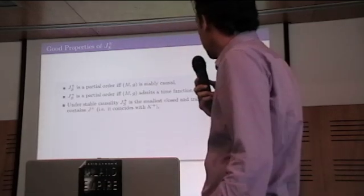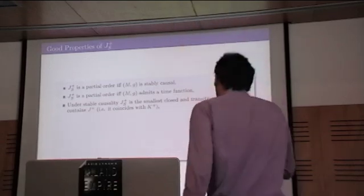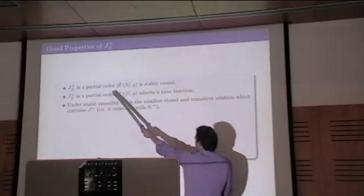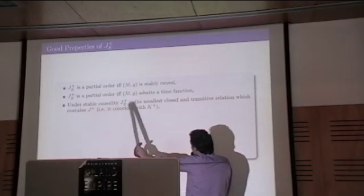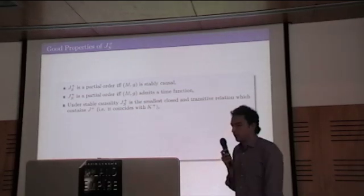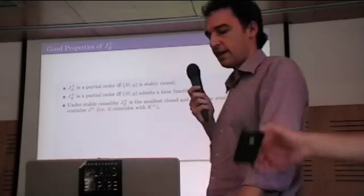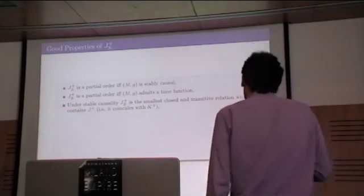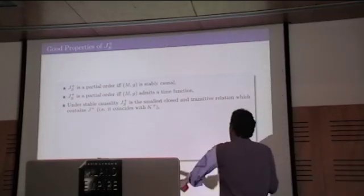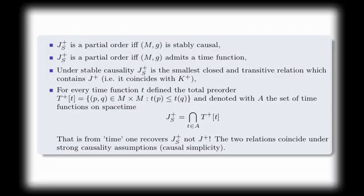In part, this relation has many good properties. First, this relation here is a partial order if the space-time is stably causal. So if and only if it admits a time function. And there is this fact here: this relation under stable causality is the smallest, actually, closed and transitive relation which has the property of containing the causal relation. In technical terms, it is the same as the relation introduced by Sorkin and Woolgar called K+.